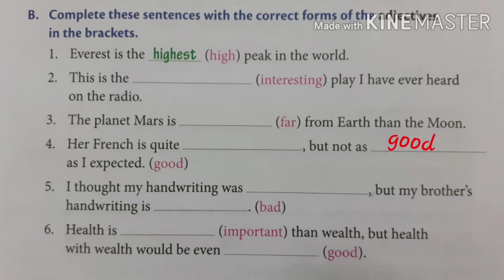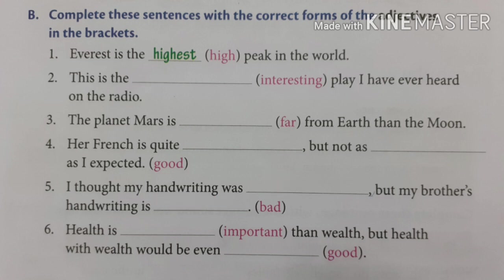'I thought my handwriting was ___ but my brother's handwriting is ___.' Here we use: 'I thought my handwriting was bad but my brother's handwriting is worse.' Then: 'Health is ___ than wealth. But health with wealth would be even ___.' Health is more important than wealth. But health with wealth would be even better.